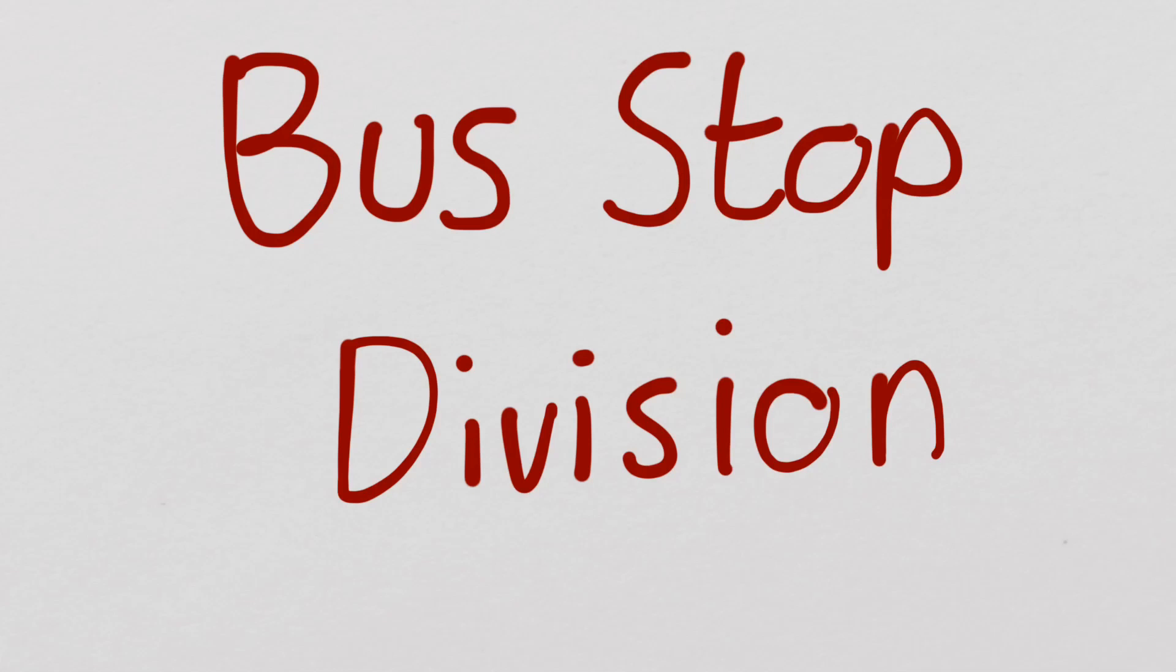This video is looking at the bus stop method for division. So here we have a division question, 64 divided by 2. Now what we do is first of all we draw a bus stop like that. And in the bus stop we put the bigger number which is known as the dividend. The big number goes inside the bus stop like that. The smaller number, the number we're dividing by, the number 2, goes outside the bus stop here. That's called the divisor and that goes outside.